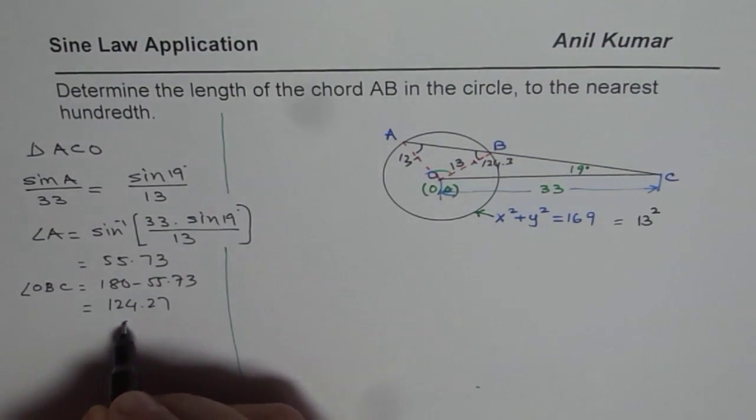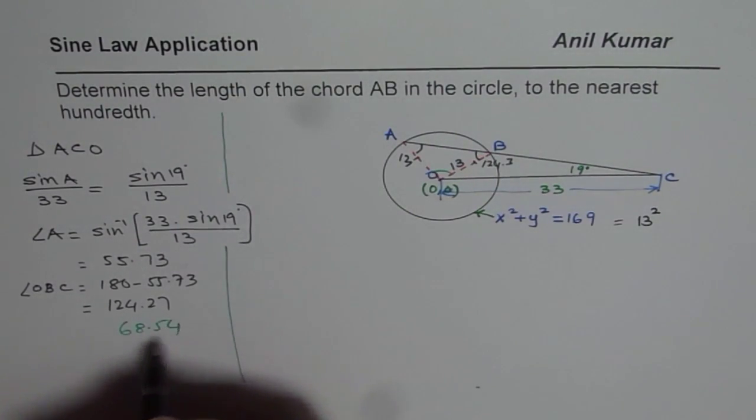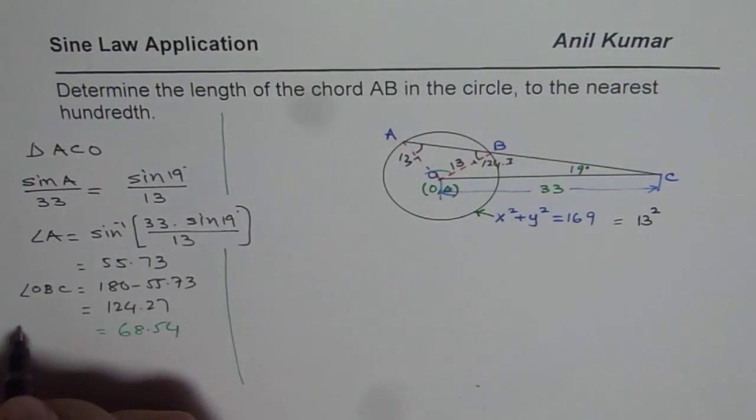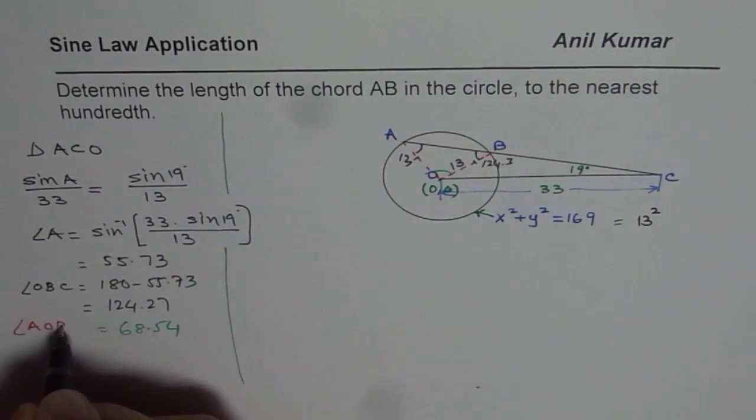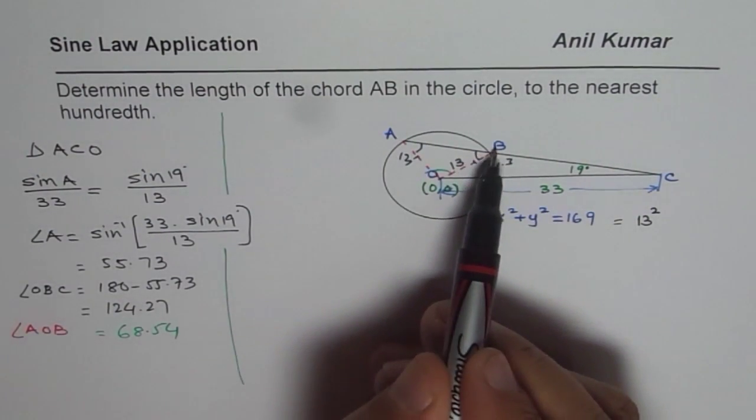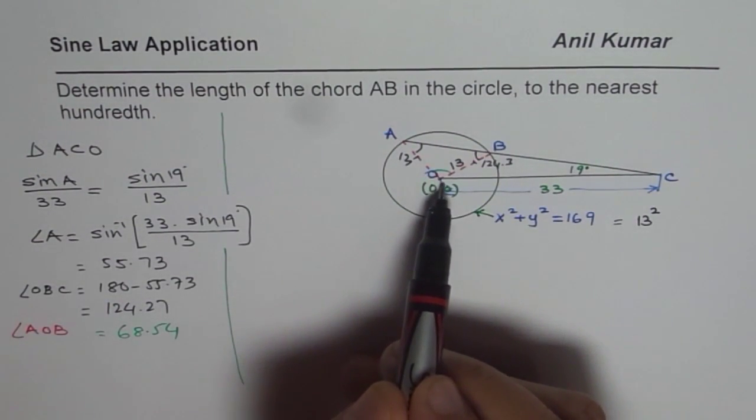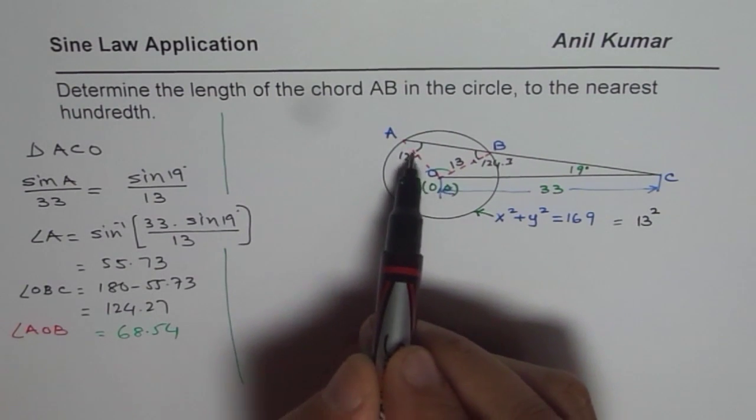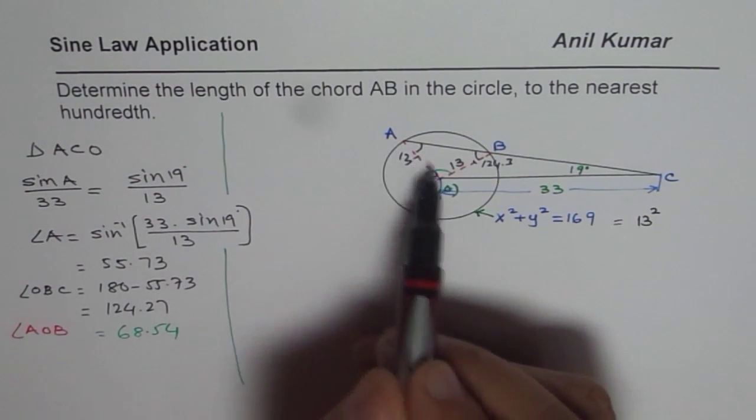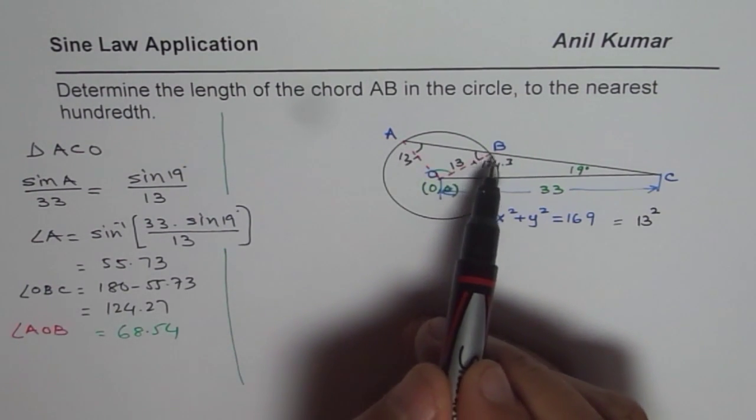So we also know that 68.54 is the angle at the center which is angle AOB. So the alternate approach could be to find the length AB using the cosine law knowing the two sides as 13 and the angle included in between. So we can use cosine law also to find the length of the chord AB.